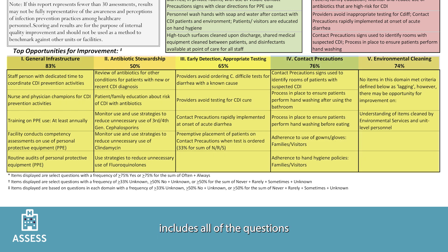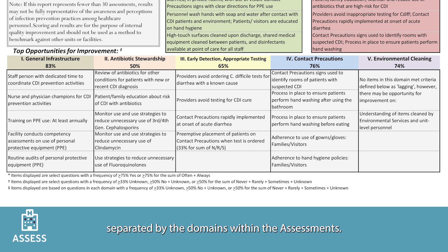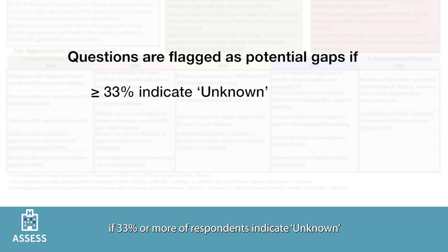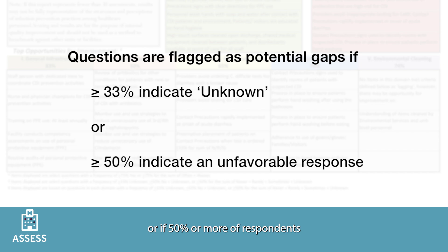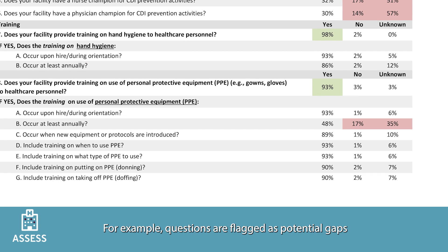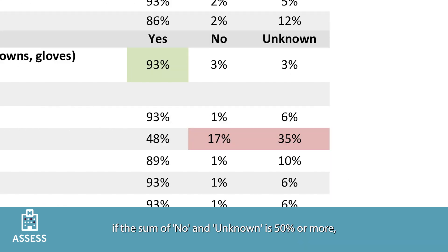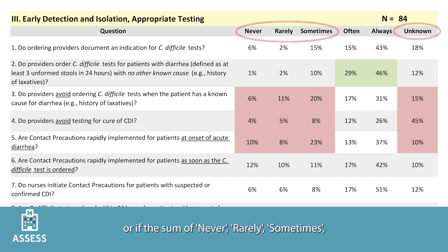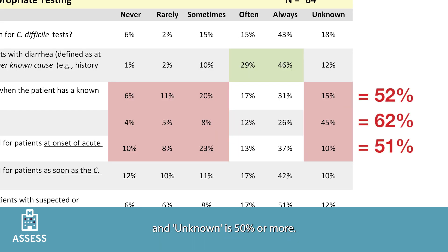The top opportunities for improvement section includes all questions for which potential gaps have been identified, separated by the domains within the assessments. Questions are flagged as potential gaps if 33% or more of respondents indicate unknown, or if 50% or more indicate an unfavorable response. For example, questions are flagged if the sum of 'no' and 'unknown' is 50% or more, or if the sum of 'never,' 'rarely,' 'sometimes,' and 'unknown' is 50% or more.